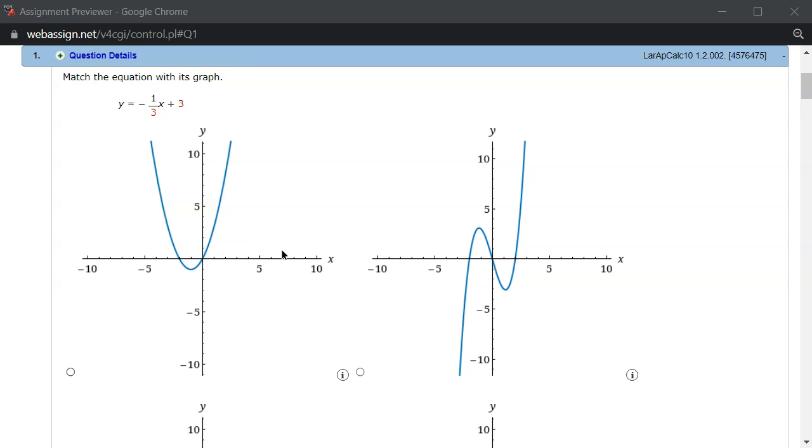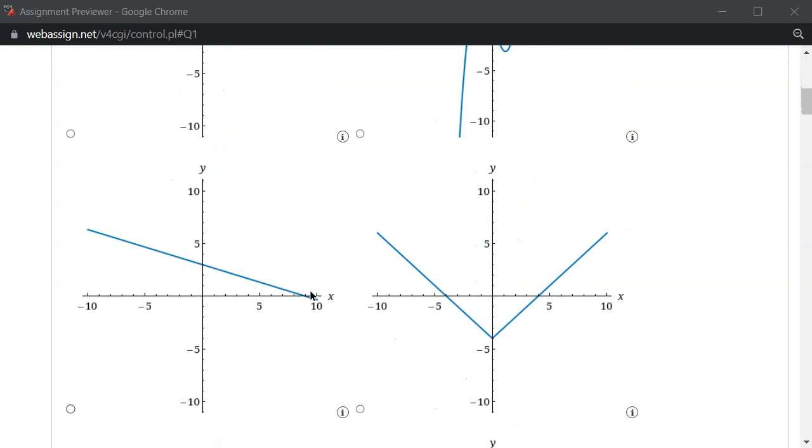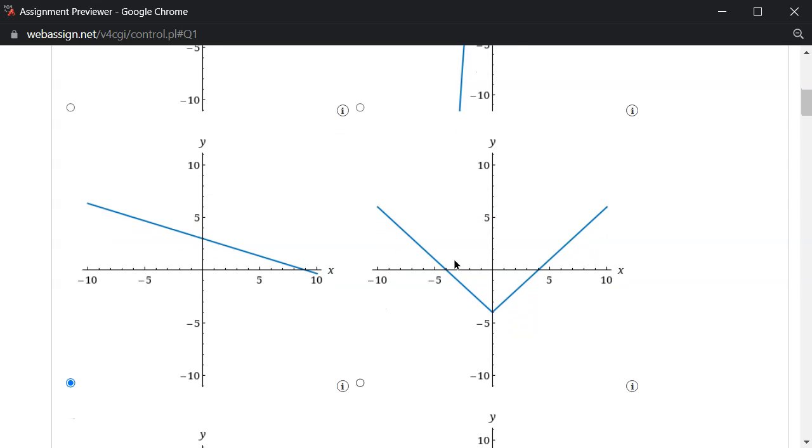First picture, it's not a line, not a line there. This one here is going down and going through y-intercept 3, so this is probably it. And here, this is not it.